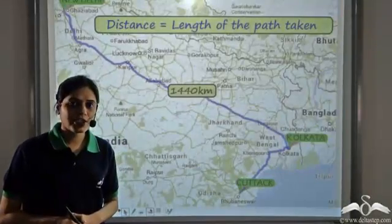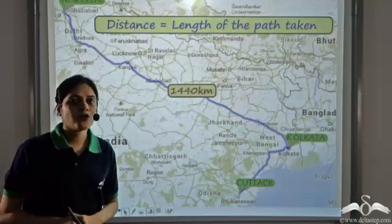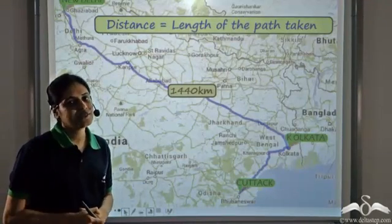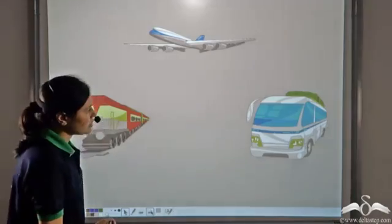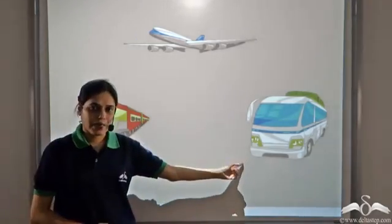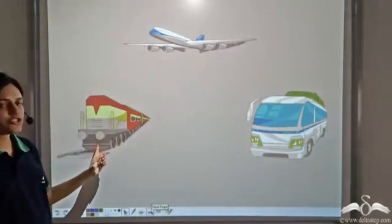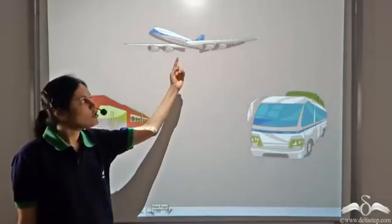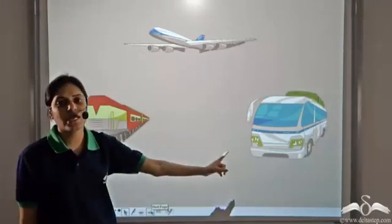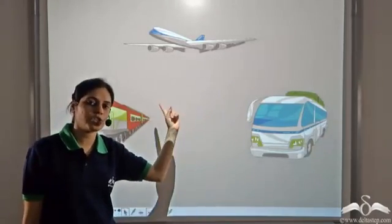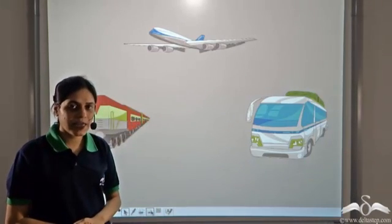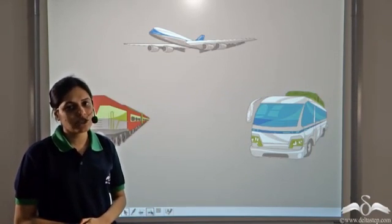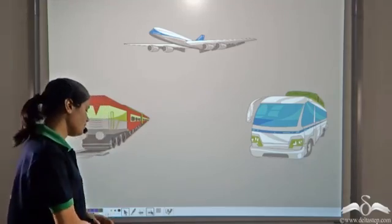Having decided on the place, they now wanted to decide their mode of transport. They had three options: they could either go by bus, take a train, or take a plane. The question is: what is the difference between these three options?